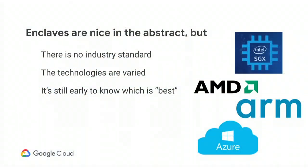Isolation and attestation are nice properties to say that an enclave is in the abstract. But unfortunately, that is not an industry standard. There are a lot of technologies that market themselves as enclaves or trusted execution environments that don't give all aspects of isolation and attestation that we really want. And because it's too early to know which technology is really going to win in the marketplace, it's nice to have your enclave applications written for an abstract notion of an enclave so that you can move around.